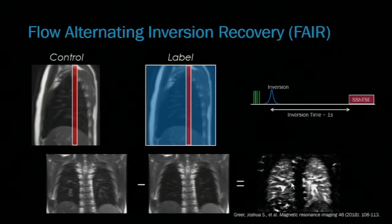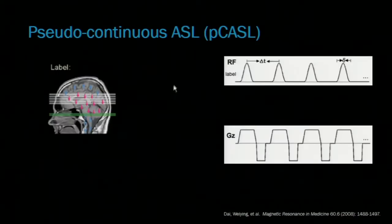We could use this technique to measure pulmonary perfusion following a Fontan operation, but since this signal originates from just anywhere outside of our imaging plane, we don't know whether it came from the SVC or the IVC. So there's another technique, PCASTLE, that we can use to specifically label an inflowing vessel.